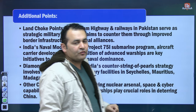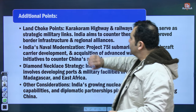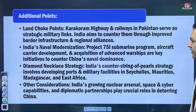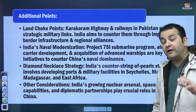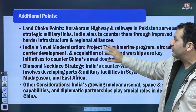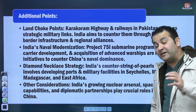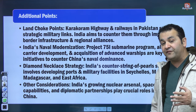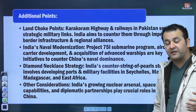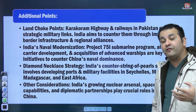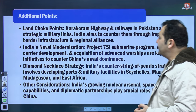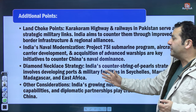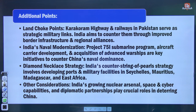Additional important points: land choke points — the Karakoram Highway and railways in Pakistan serve as strategic military links. India aims to counter them through improved border infrastructure and regional alliances, including the Look East to Act East policy. India's naval modernization — Project 75I submarine program, aircraft carrier development, and acquisition of advanced warships — are key initiatives to counter China's naval dominance. You should ask yourself what acquisitions are there and what DRDO is indigenously designing or building.